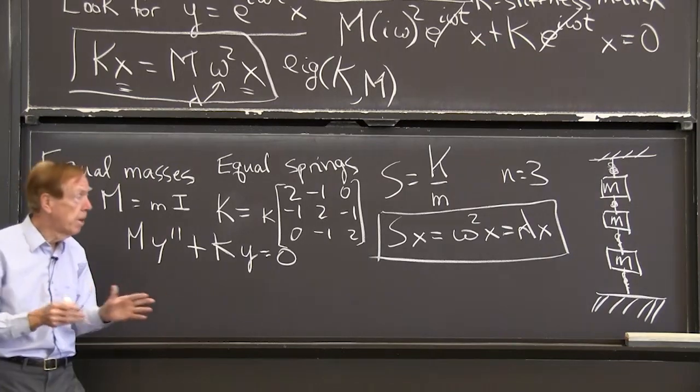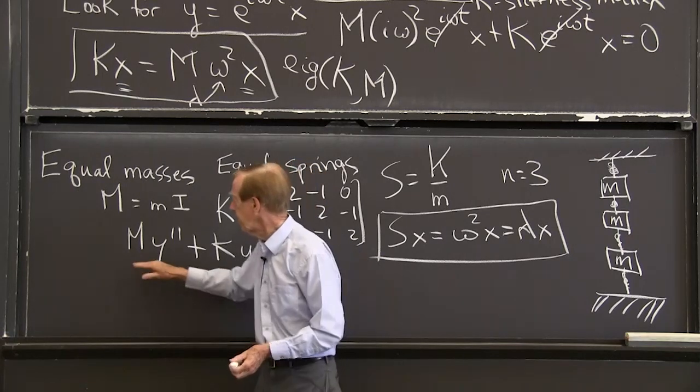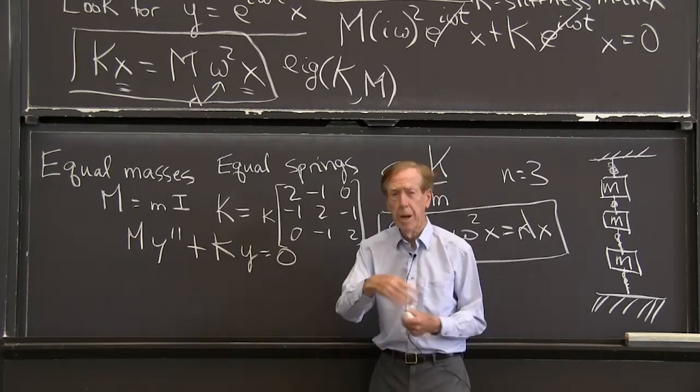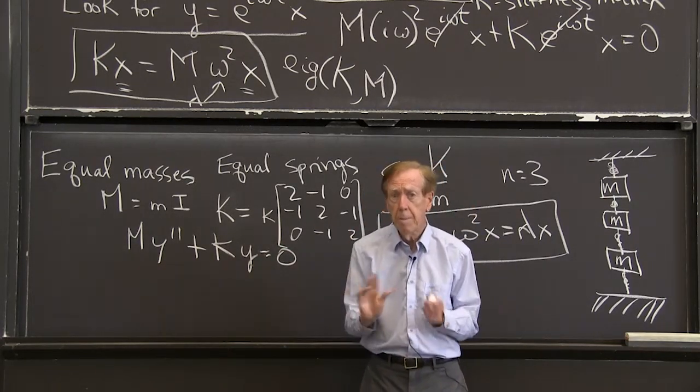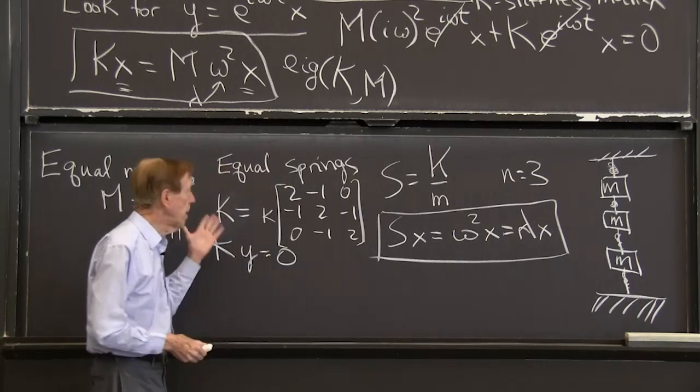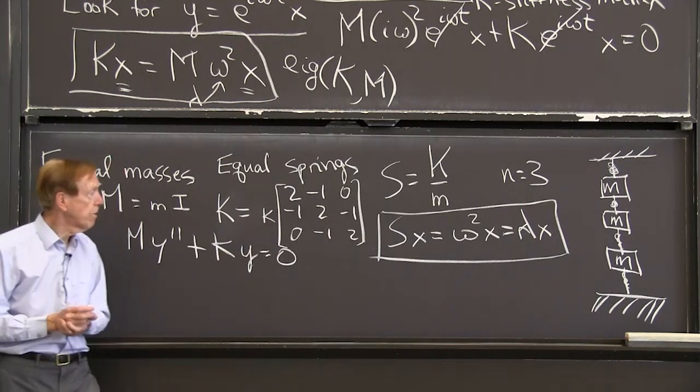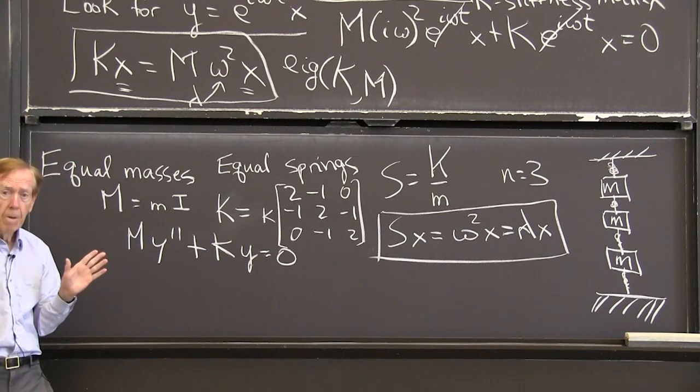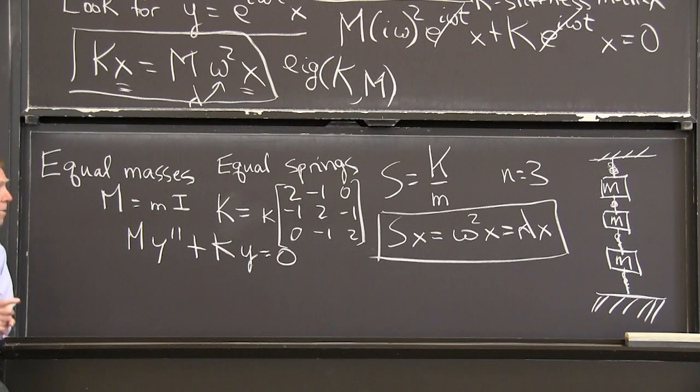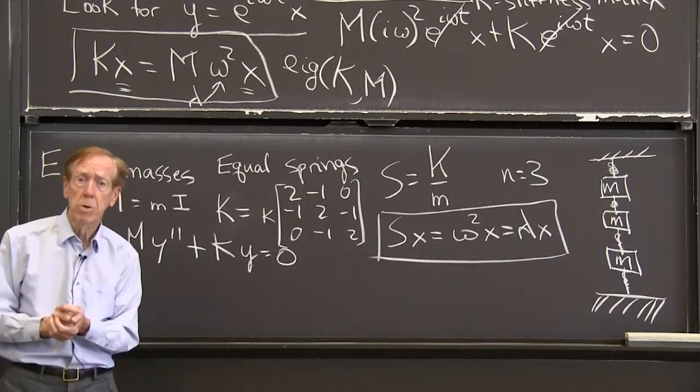We know all about this equation when y is just a scalar, just one equation. We know that led us to the square root of k over m. That was just a one by one eigenvalue problem. And now we will have a three by three eigenvalue problem. The mass matrix is simple. Here's what the stiffness matrix would look like if all those springs were the same. Time to write down solutions.